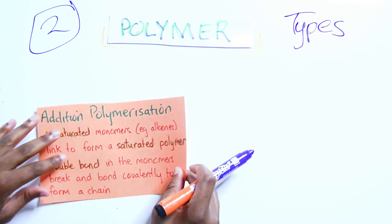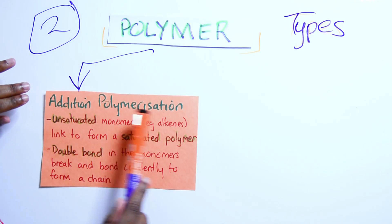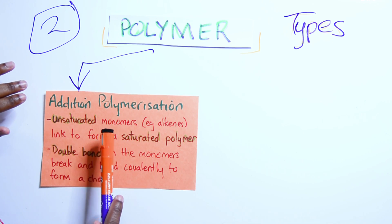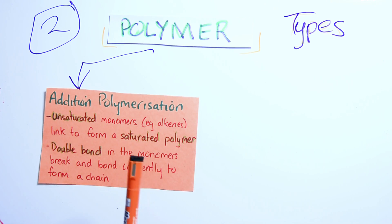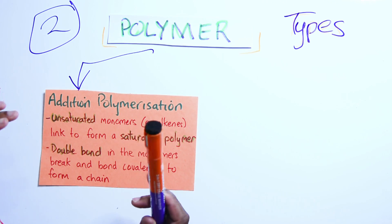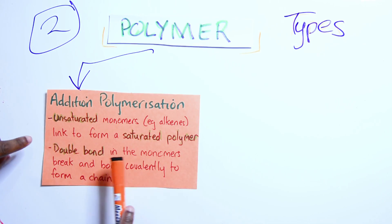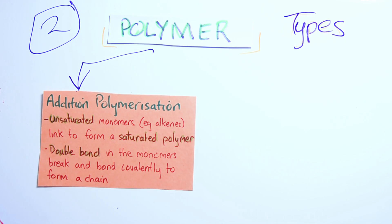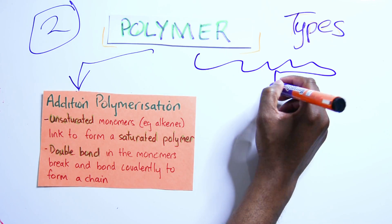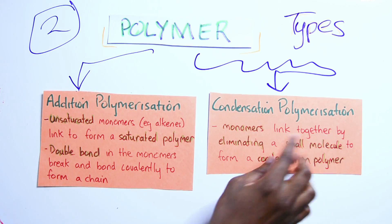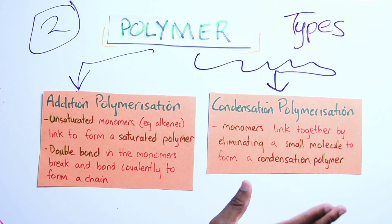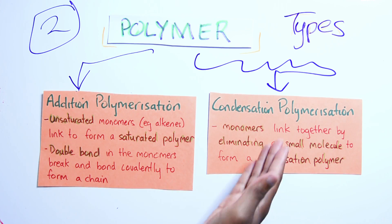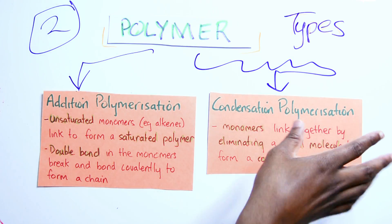The next thing you need to know is the types of polymers. We have two types. The first is addition polymerization, where unsaturated monomers — for example alkenes — link to form a saturated polymer. The second is condensation polymerization, where monomers link together by eliminating a small molecule to form a condensation polymer.